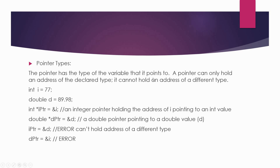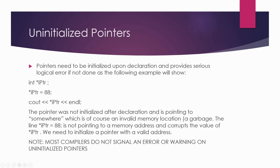Regarding pointer types: a pointer has the type of the variable it points to, and a pointer can only hold an address of its declared type. For example, 'int* iptr = &i' and 'double* dptr = &d' are valid. However, 'iptr = &d' (assigning the address of a double to an int pointer) is illegal, and 'dptr = &i' (assigning the address of an int to a double pointer) is also illegal.